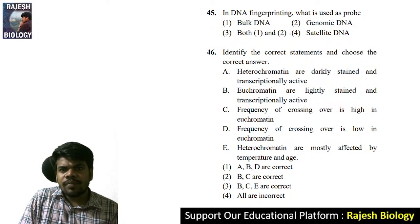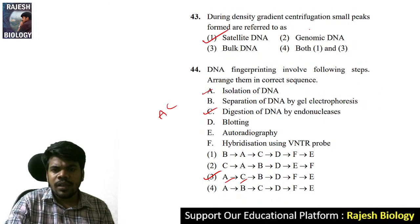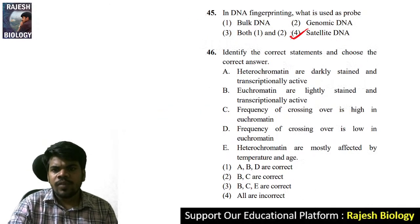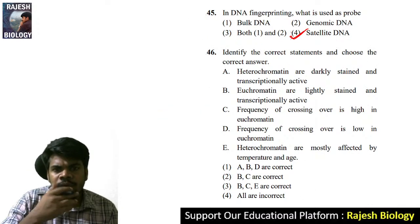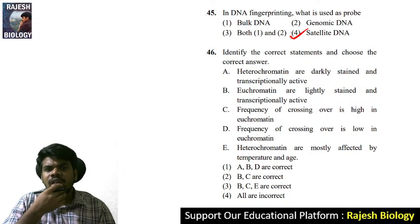What is used as a probe in DNA fingerprinting? VNTR — variable number of tandem repeats — is used as a probe, not bulk DNA or genomic DNA.